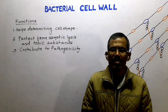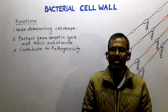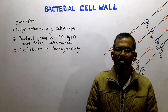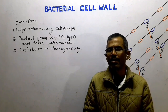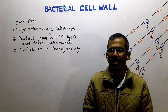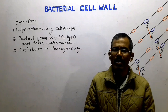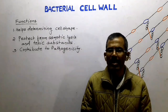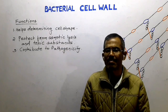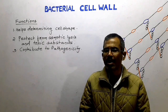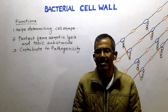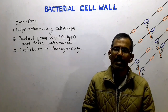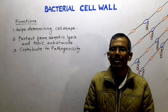Bacterial cell wall is a rigid layer that lies just outside the plasma membrane. It is one of the most important prokaryotic structures for several reasons. The cell wall helps determining the cell shape. It also helps protecting the cell from osmotic lysis and from toxic substances. In case of pathogens, the cell wall may contribute to pathogenicity.